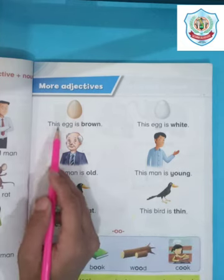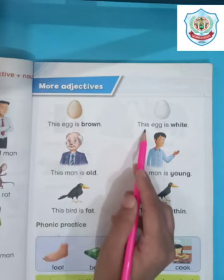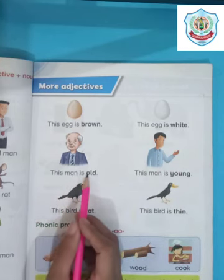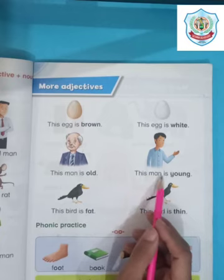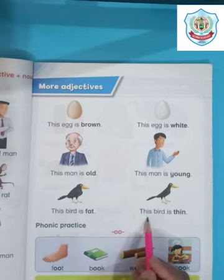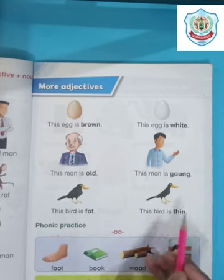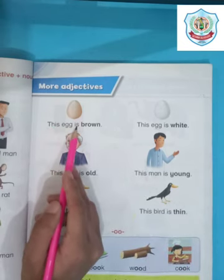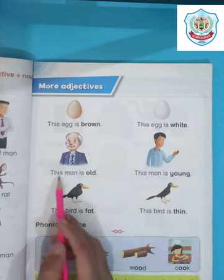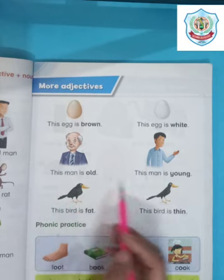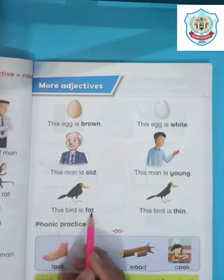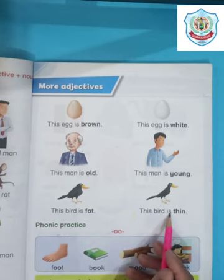Revise with me: This egg is brown. This egg is white. This man is old. This man is young. This bird is fat. This bird is thin.